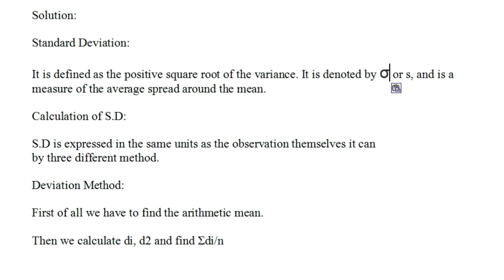The calculation of standard deviation: SD is expressed in the same units as the observations themselves. It can be calculated by three different methods. Using the deviation method, first we find the arithmetic mean, then we calculate d_i and d_i squared, and then find the summation of d_i upon n.